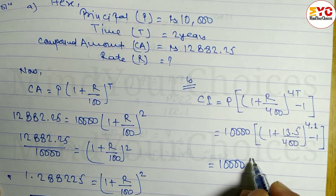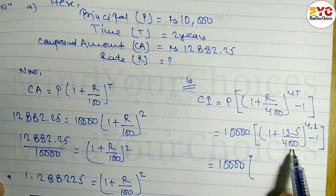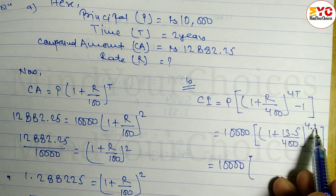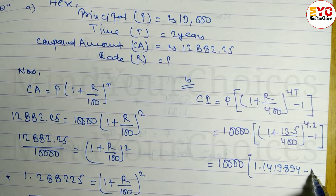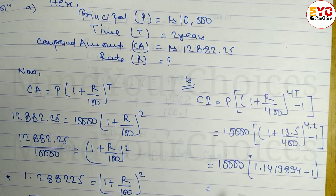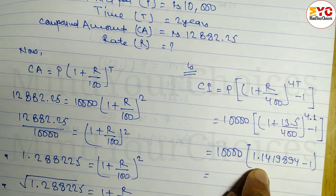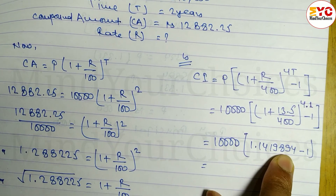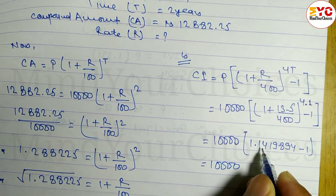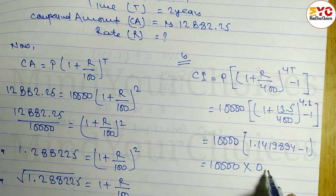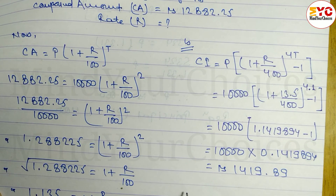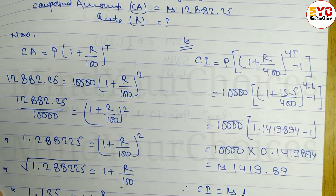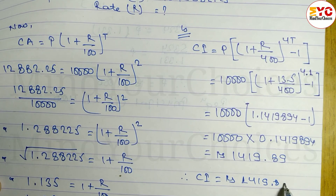Calculate: 13.5 divided by 400, then add 1, then raise to the power 4. This gives 1.1419894. Subtract 1 to get 0.1419894. Note: writing only two decimal places will not give the exact book answer. Multiply 10,000 by 0.1419894 to get 1419.89. Therefore compound interest CI is equal to rupees 1419.89.